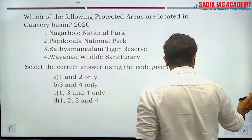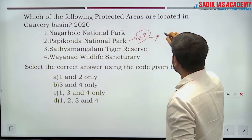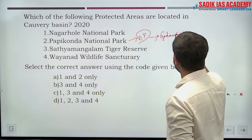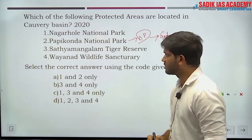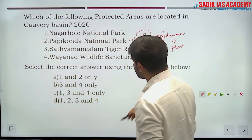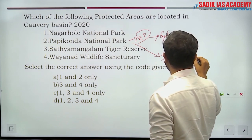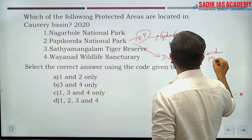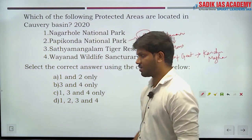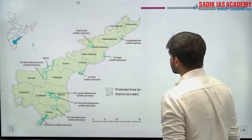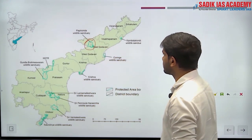Papikonda National Park is situated in Andhra Pradesh, and the Godavari River flows inside it. This national park is also famous for a dwarf goat breed called Kanchimegha (K-A-N-C-H-U-M-E-G-H-A). Papikonda National Park is in the East and West Godavari districts.